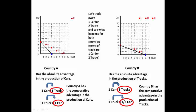If country B traded away two more trucks, it would get an additional car. Continuing this pattern with each additional two trucks traded away yielding one more car, connecting these dots produces a line outside its own production capabilities — this is country B's consumption possibilities curve. Both countries are better off through specialization and trade.